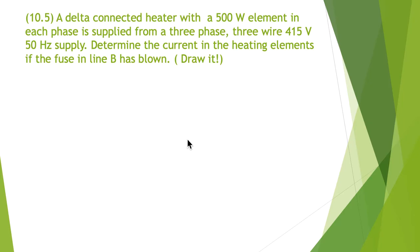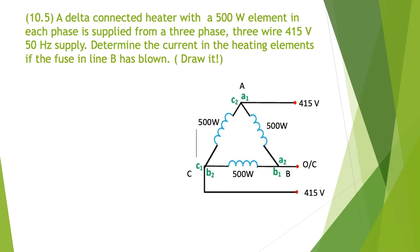Question 10.5. A delta connected heater with a 500 watt element in each phase is supplied from a three phase, three wire, 415 volt, 50 hertz supply. Determine the current in the heating elements if the fuse in line B has blown. Again, exclamation mark, draw it. So here I've drawn out on my screen for you.